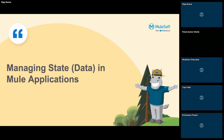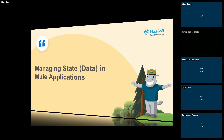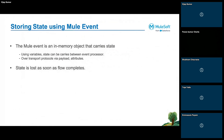In Mule applications, the first way to preserve state is using the Mule event. The Mule event is an in-memory object which carries the state, and we can use it to store the message in the flow. We can use variables, payload, and attributes to carry the state in a flow. Since the Mule event gets stored in the JVM heap, as soon as the flow completes we will lose the state, and it can only be used inside a single application or single flow.